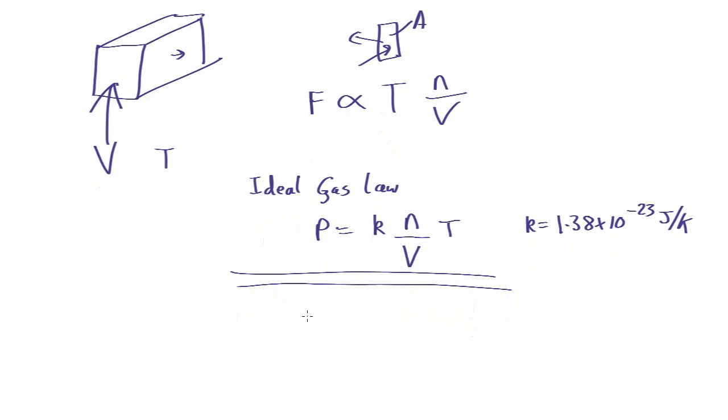We can rearrange it and we get the pressure times the volume equals the number of molecules in that volume times Boltzmann's constant times the temperature. So that's the normal form you see the ideal gas law written in.